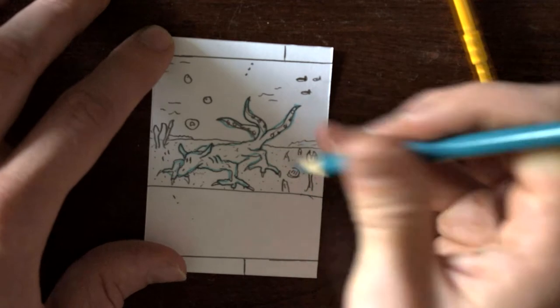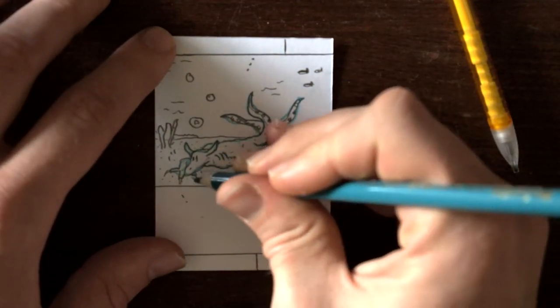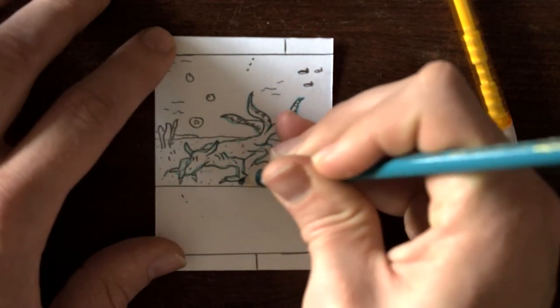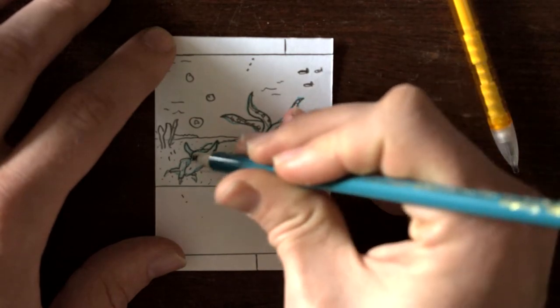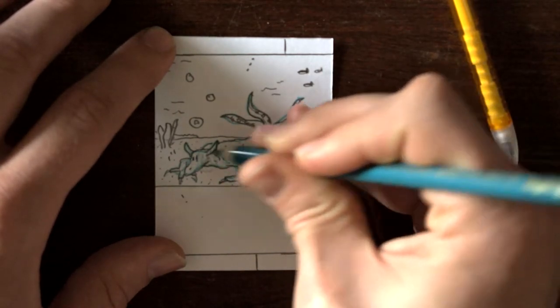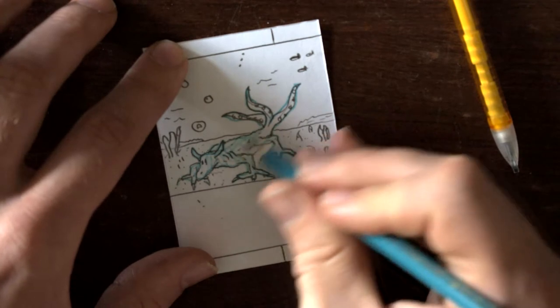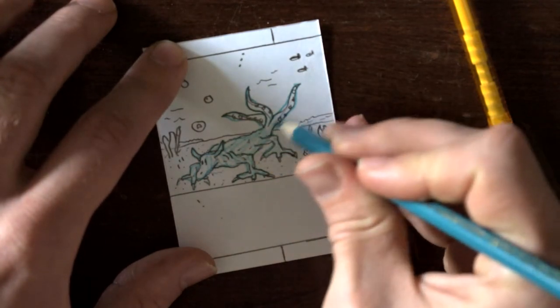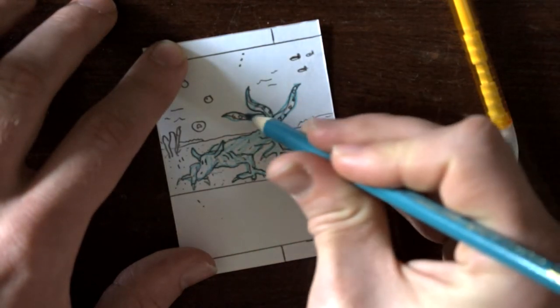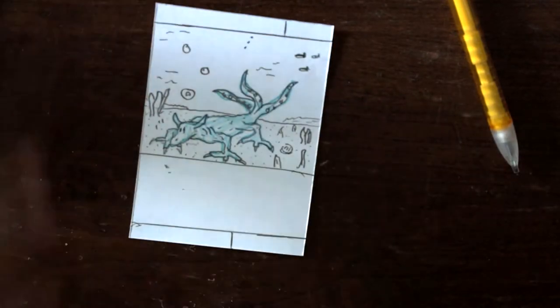All righty. Look at that. So he's already all colored. Maybe we'll go ahead and trace his claws. These are blue claws. Now we just fill in a hand man. He's colored.